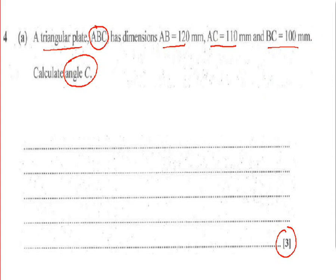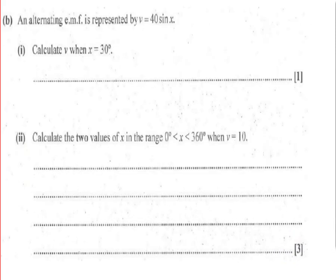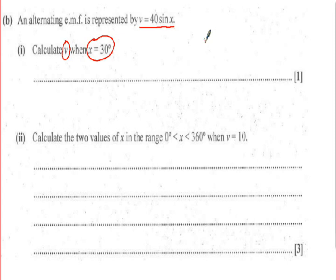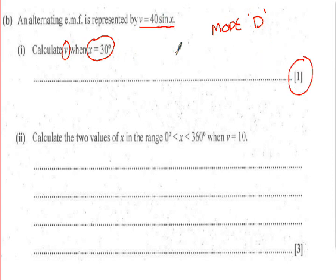Part b gives the equation v = 40sin(x). First, find the value of v when x = 30°. Be careful about your calculator mode — if degrees are given, you must be in degree mode. Check for the degree symbol at the top of the screen and not radians, otherwise you'll get the wrong answer. It's only one mark because it's just plugging numbers into the equation.